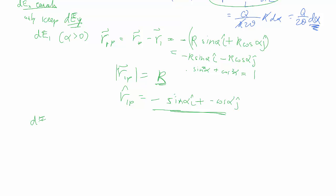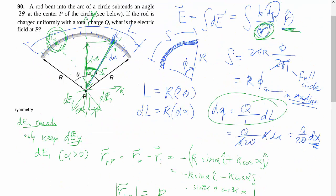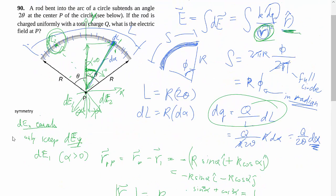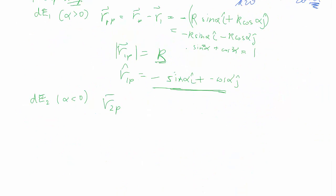And just to check, we can set up the same thing for alpha less than 0 in case number 2, this guy up here. In which case, alpha is measured here, but it's going to be a negative number because it's to the left of where alpha equals 0. So R2p follows the exact same way.